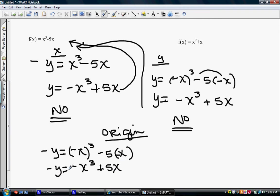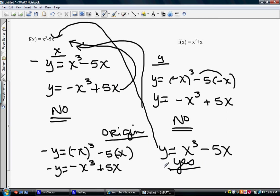we get y equals x cubed minus 5x. Now if we go back and we compare that to what we had in the beginning, it's the exact same function we started with. We were testing the origin, so we get a yes over here with the origin. Yes, it is symmetric about the origin. And anything that's symmetric about the origin we call an odd function. So this one happens to be an odd function.